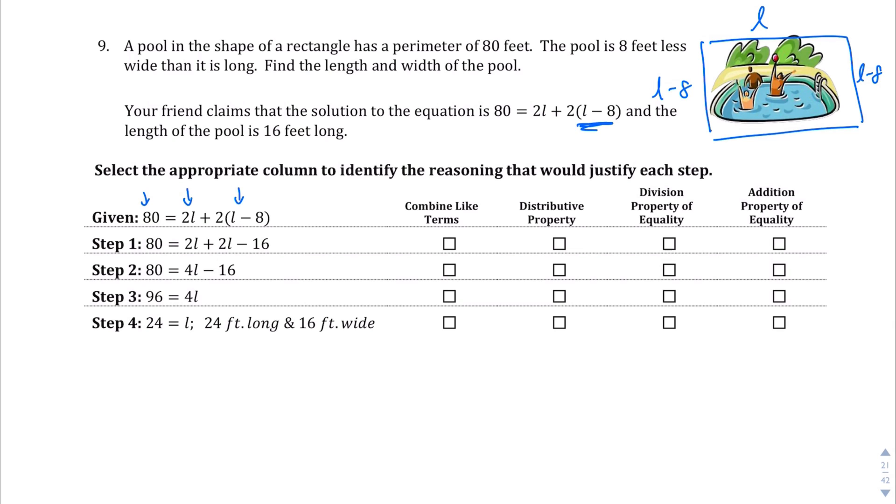Step 1, we are—let me see. What we do here is it looks like they're distributing that 2. It looks like that's what happened there. So I'm going to say distributive property there. And then in step 2 it looks like we got a 4L. And the only way they could have gotten 4L is if they combined these two like terms. So combining like terms is what I'm going to go with. And then to go from step 2 to step 3, it looks like they added 16 to both sides. So I'm going to say addition property of equality. And sure enough there's a choice for that. And then divide both sides by 4 to get 24 equals L. So since we divide by 4, we're going to say division property of equality for that last one.